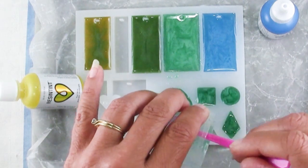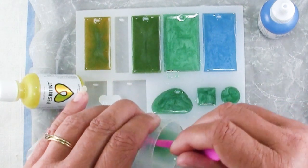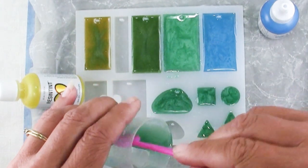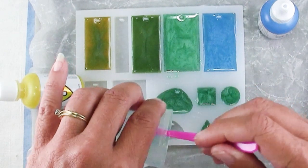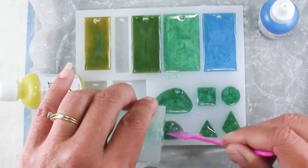Don't forget when you put your resin aside to cure to put a box upside down over it just to keep any dust or pet hair.